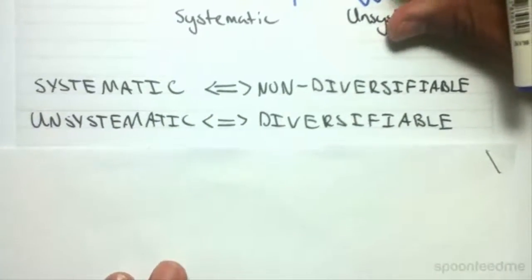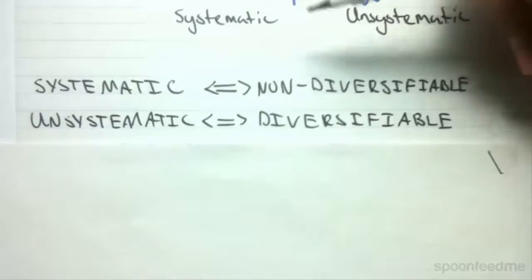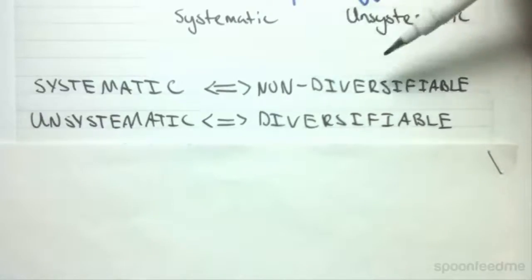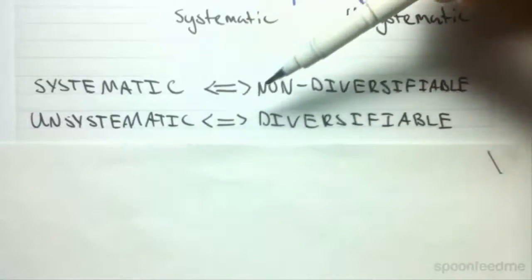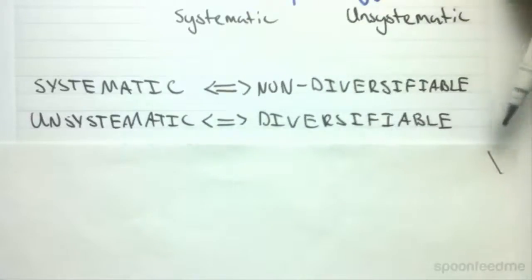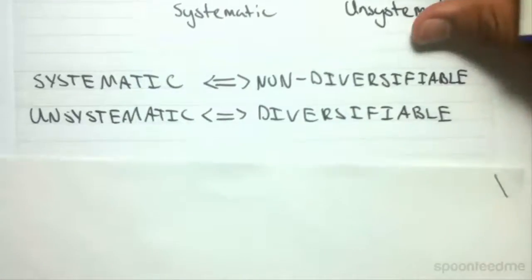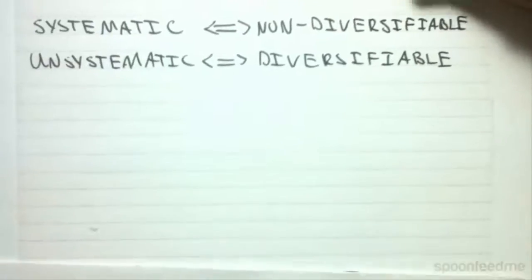And for these reasons, we like to use the word non-diversifiable interchangeably with systematic, and we like to use unsystematic with diversifiable risk. This is something to remember, something to memorize, but I can offer some sort of understanding.